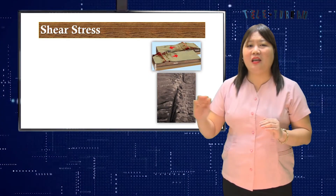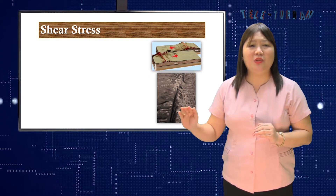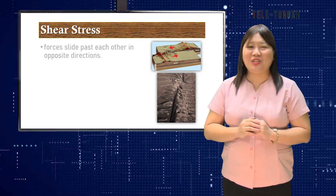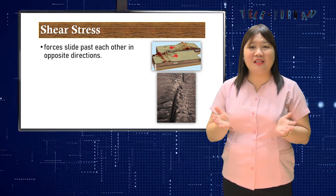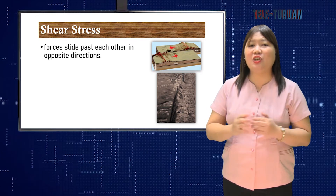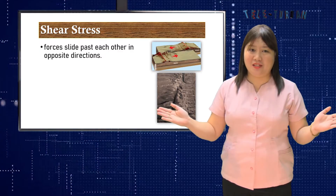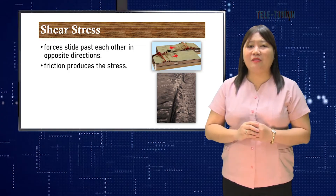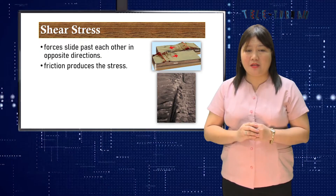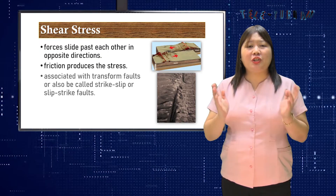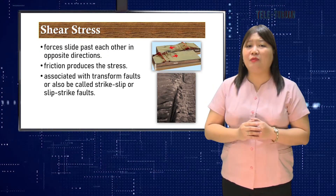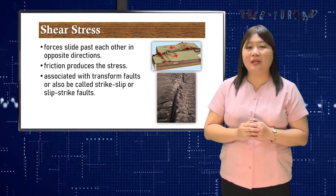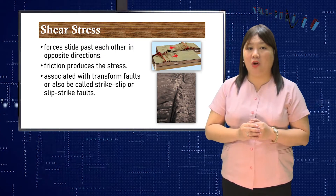Near the surface, if the stress continues, the rock will fracture and break. Shear stress happens when forces slide past each other in opposite directions — friction between the plates grinding past one another produces the stress. Shear stress is associated with transform faults, also called strike-slip faults.